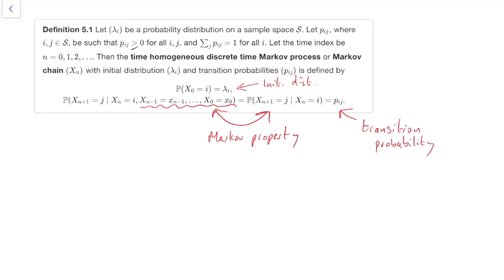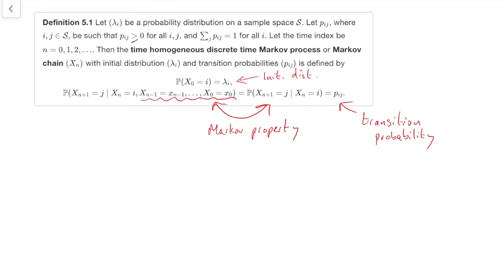To try and get a hang of what these mean, it's useful to have some other notation. One is that all these p, i, j's, these transition probabilities, it will turn out to be really useful to write them down in a matrix.